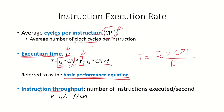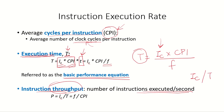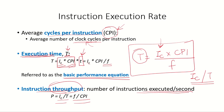Instruction throughput is another way to measure and compare the performance of two machines. It is the number of instructions executed per second, calculated as IC divided by T. This is also equal to F divided by CPI. So throughput = F / CPI, or equivalently, the number of instructions executed divided by the total execution time.